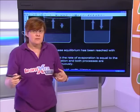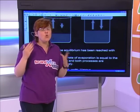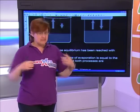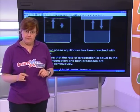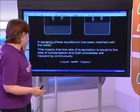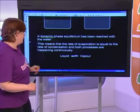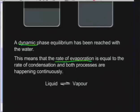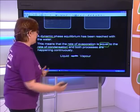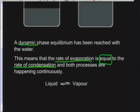After a period of time, the rate at which evaporation is happening becomes equal to the rate at which condensation is happening. This is what we call a dynamic equilibrium. Even though if we were just looking at the glass it would appear as if nothing is happening, if we could see the molecules we'd see them escaping and going back in at the same rate.